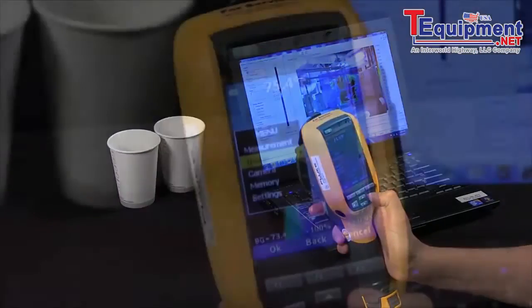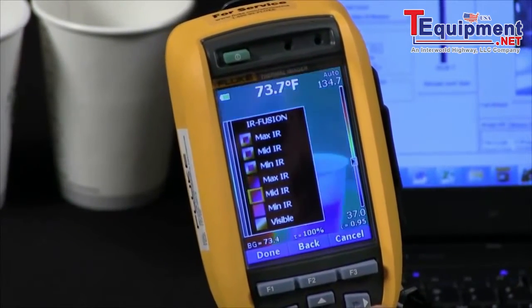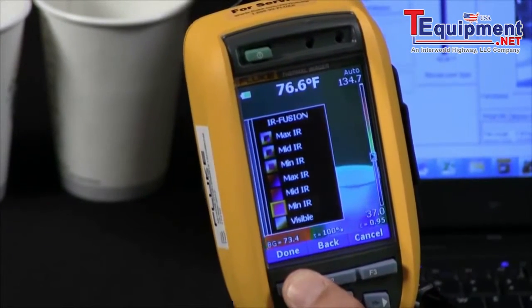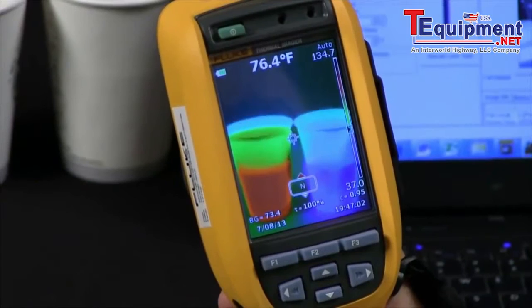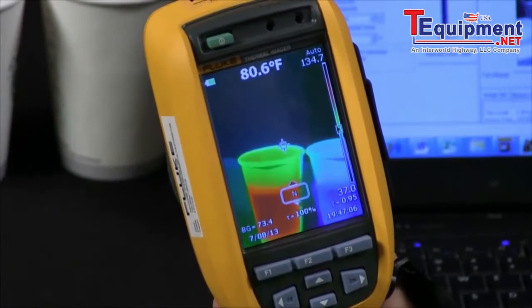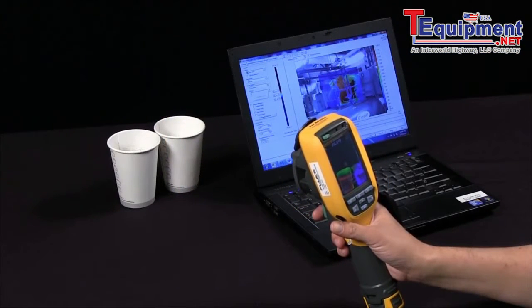Now if I go ahead in the menu, I can go to Image, I can go to IR Fusion, and I can bring it down to MinIR, which essentially is an overlap of a digital image and a thermal image. As you can see, when I move my focus ring, you can see how those images are aligning together.